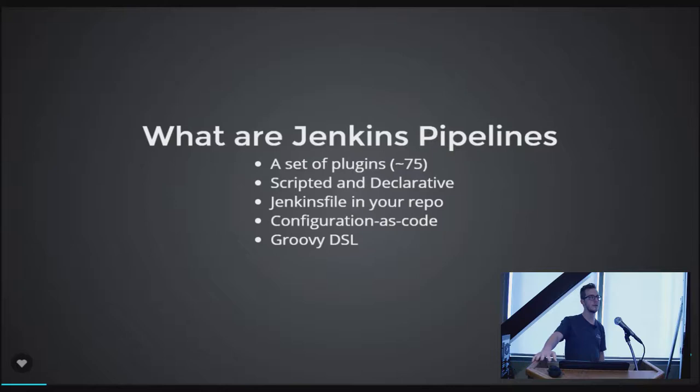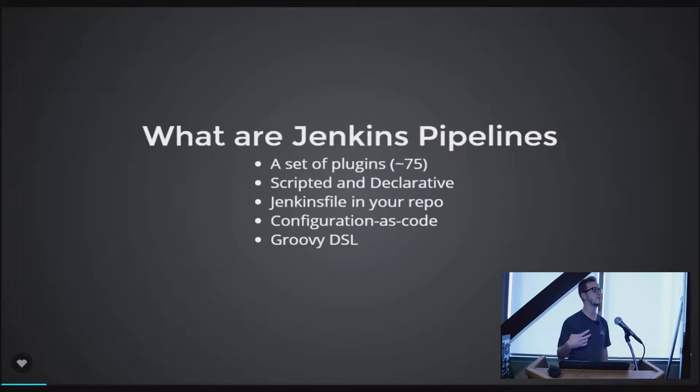Jenkins is a continuous delivery tool, like Atlassian's Bamboo, Travis CI, CircleCI, Drone, or any of those you use to build, test, and deploy your products. Pipelines on Jenkins are a set of about 75 plugins and counting — they just keep adding new ones for new features.